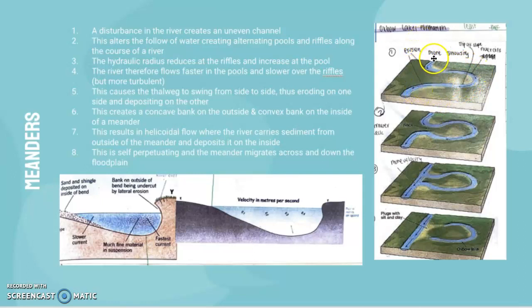This is how the sinuous shape begins to form. You have a straight river, but one part starts to get eroded faster than another until you get this sinuous or curved shape. That creates a concave bank on the outside and a convex bank on the inside of the meander - the river cliff and the slip-off slope. That results in helicoidal flow where the river carries sediment from the outside of the meander and deposits it on the inside.